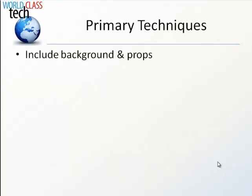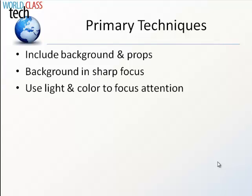So the primary techniques of environmental portraiture are: include background that tells the story of the person and tells about who they are, possibly with some props. That background should be in sharp focus — contrary to traditional portraiture, here the background should be sharply focused so that you can see it. And thirdly, try to use light and/or color in the portrait to focus attention on the main subject matter, which is the person.